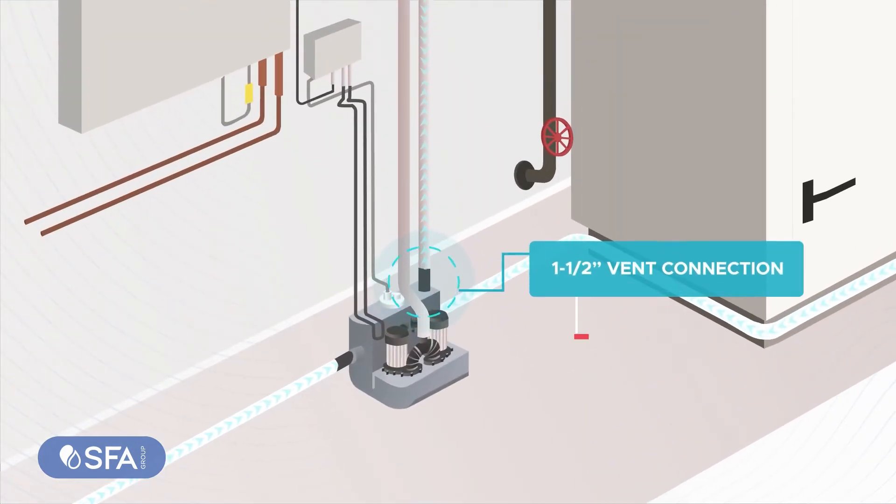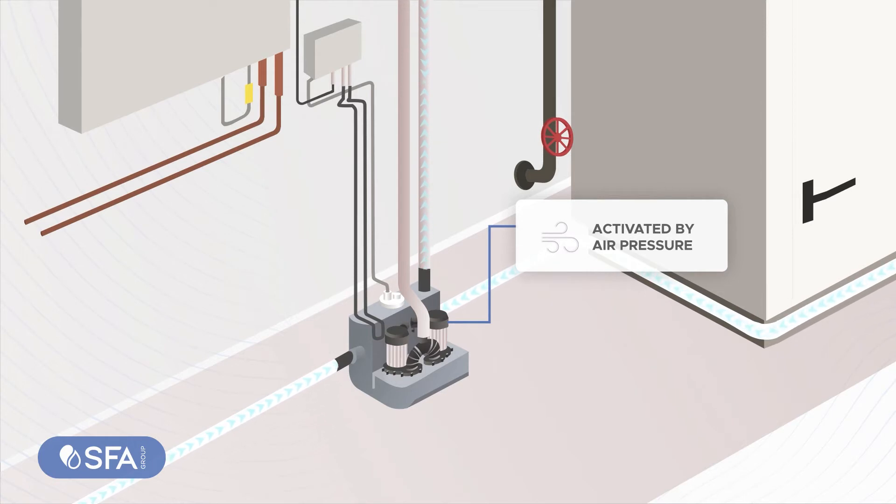The vent connection is a two-way air vent. The unit is activated by air pressure, far superior to old flow switches. With not one but three detectors, it's nearly impossible for it to fail—another major benefit.